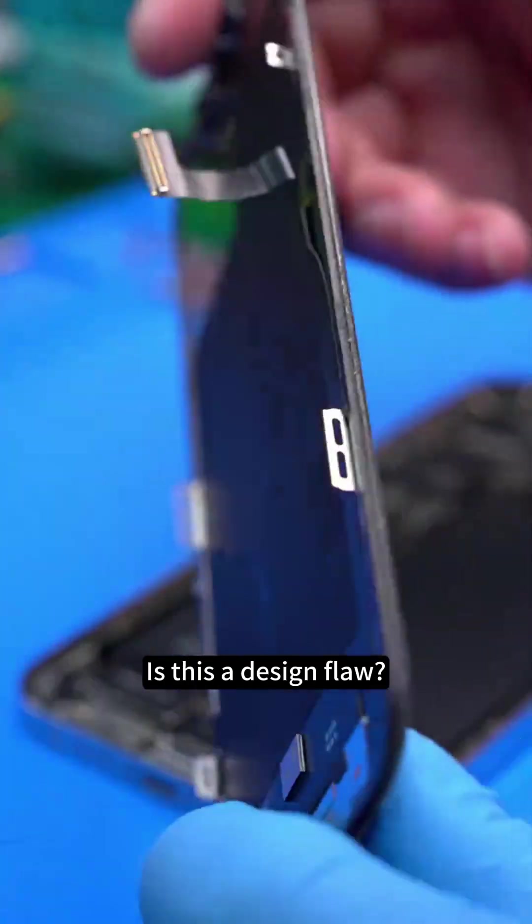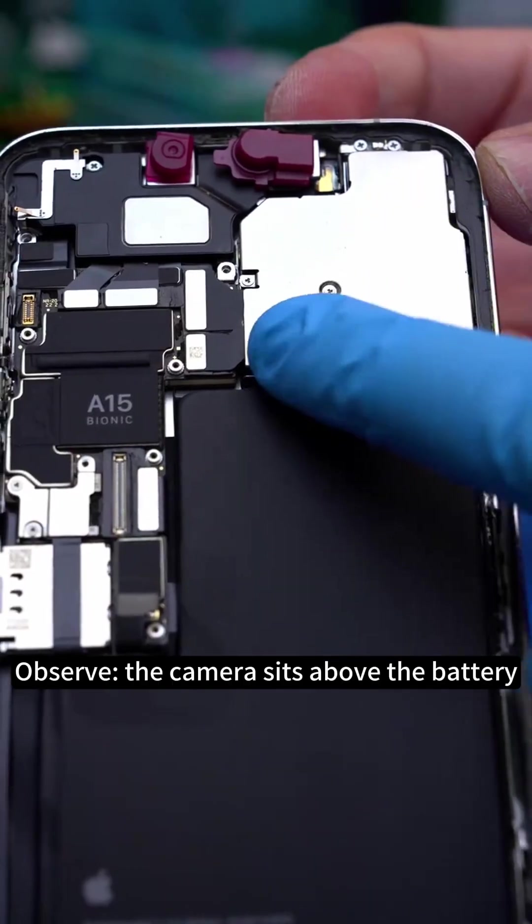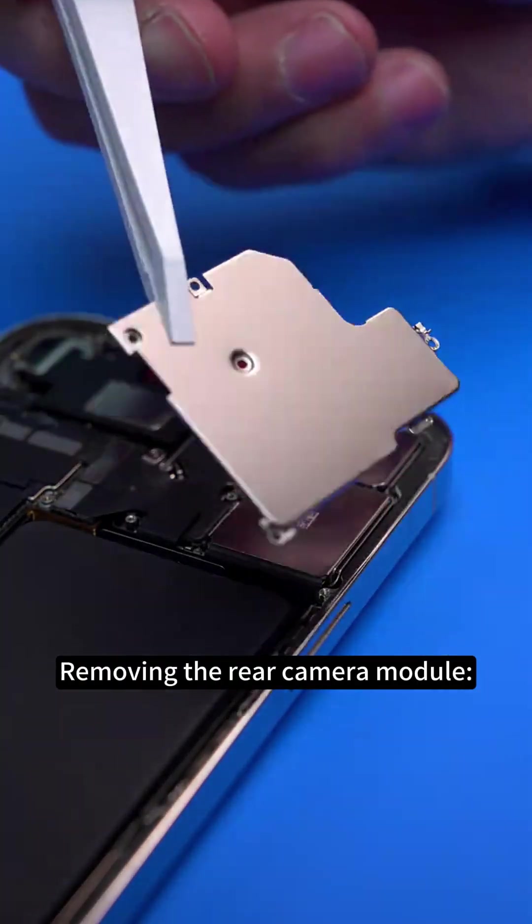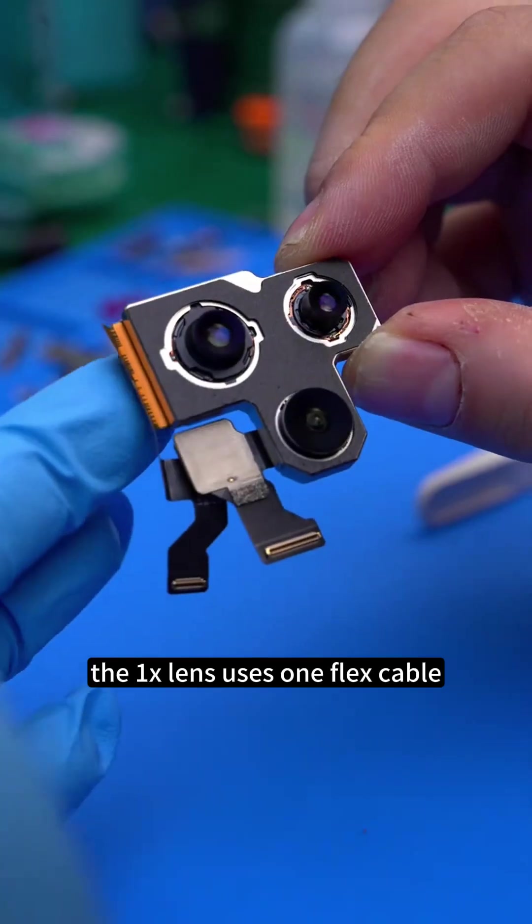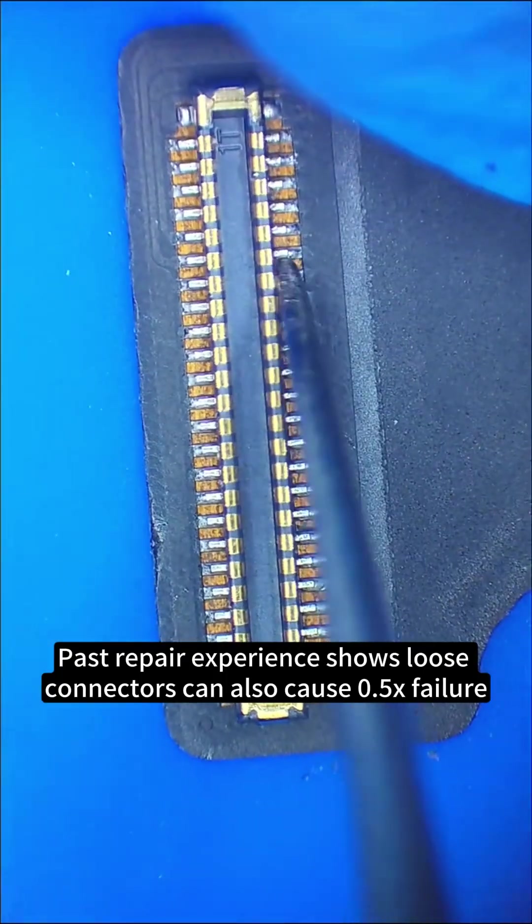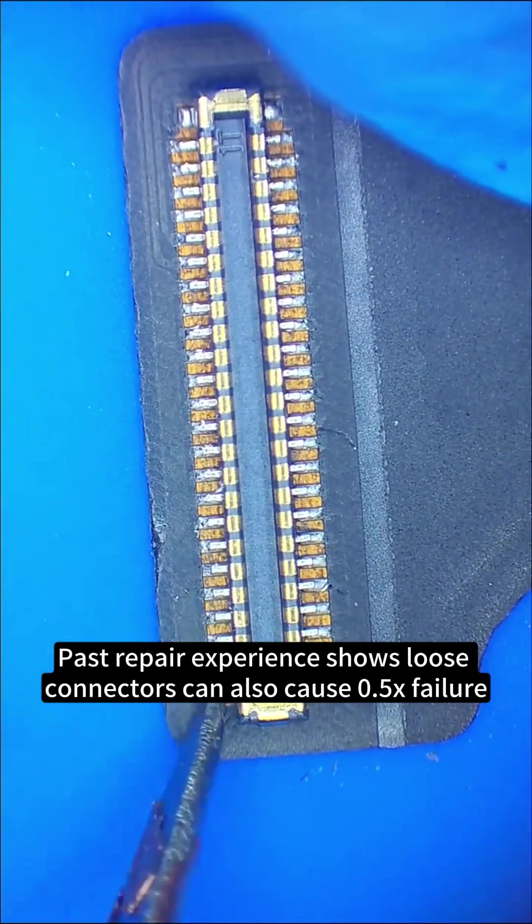Is this a design flaw? Observe the camera sits above the battery. Removing the rear camera module, the 1x lens uses one flex cable while the 3x and 0.5x share another. Past repair experience shows loose connectors can also cause 0.5x failure.